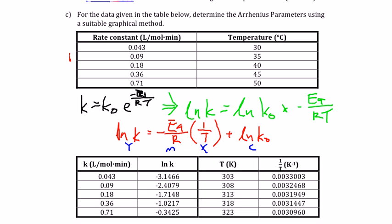So, we have these values and therefore, we can draw a graph with ln K as the Y axis and 1 over T as the X axis.